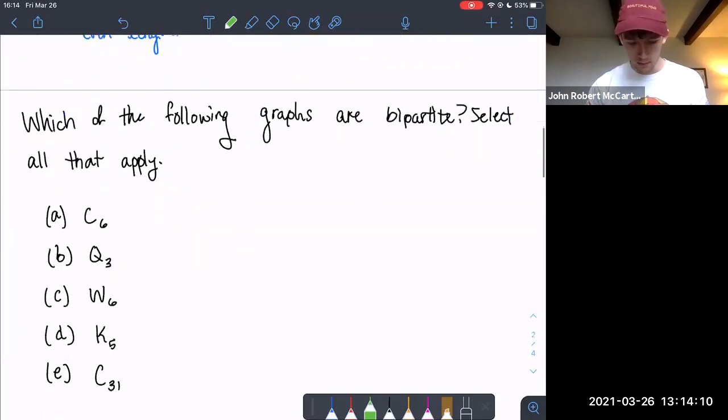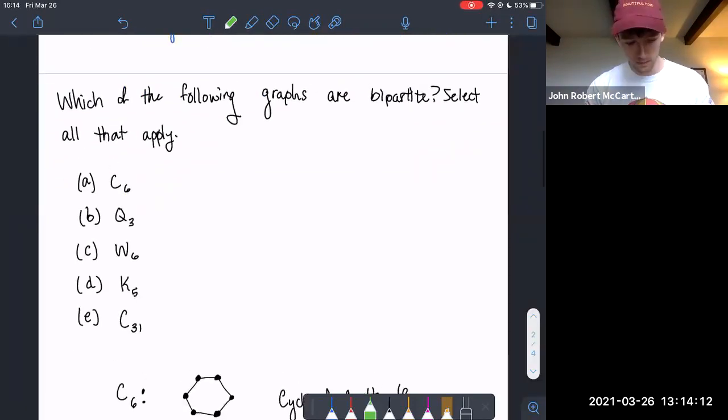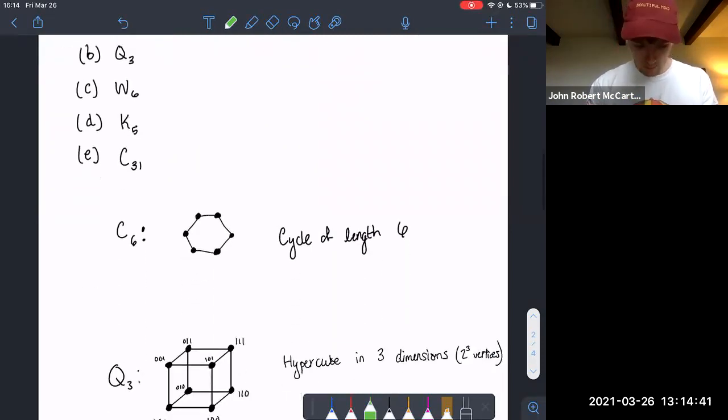Okay. So let's move on to the question. The question asks, which of the following graphs are bipartite? Select all that apply. So these are some of the special graphs that we went over in lecture. I've drawn these out and I've defined what they actually are. So if you're not sure what these mean, totally fine. We're going to go over that as well. So let's just walk through each of these one by one and see if they're bipartite using the two theorems that we defined earlier.